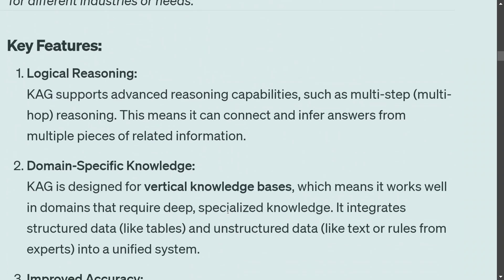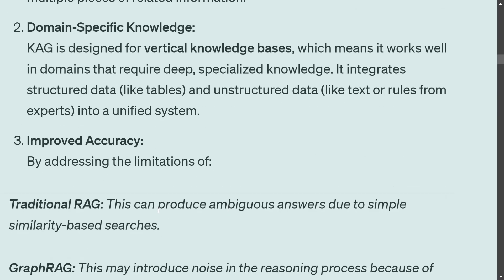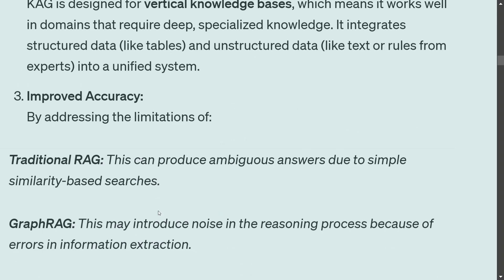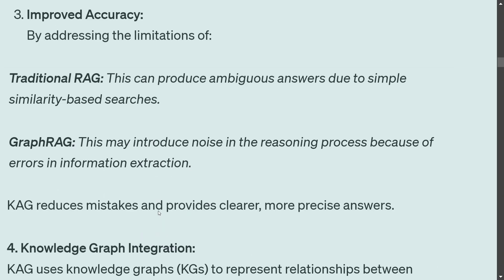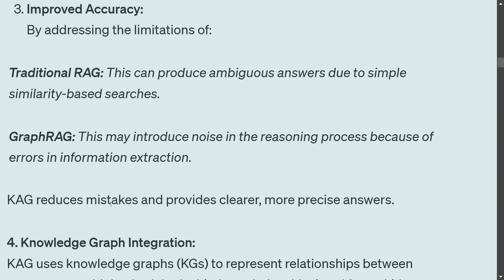Regarding key features: CAG supports advanced logical reasoning capabilities such as multi-step reasoning, meaning it can connect and infer answers from multiple pieces of related information. It is designed for vertical knowledge bases — domains that require deep specialized knowledge. It integrates both structured and unstructured data into a single system. For improved accuracy, traditional RAG at times produces ambiguous answers, and graph RAG may introduce noise in the reasoning process.